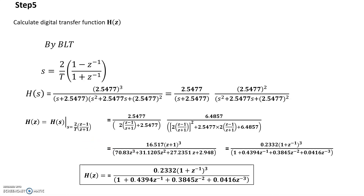To summarize: for the given frequency specification, we designed a digital Butterworth filter by first converting the digital specification to analog specification using BLT, then finding the filter order n and minus 3 dB cutoff frequency ΩC, obtaining the analog transfer function H(S) using the generalized formula, and finally converting H(S) to the digital transfer function H(Z) using BLT. This is the complete technique to design a Butterworth filter using BLT. Thank you.